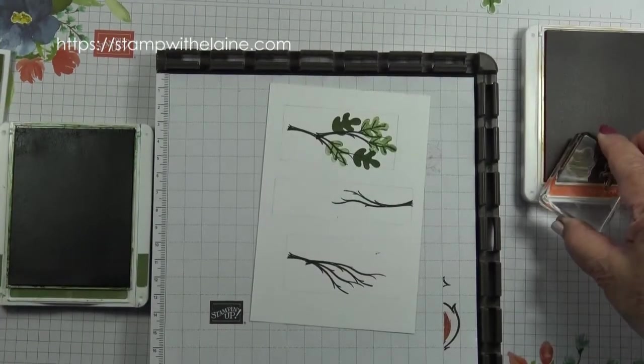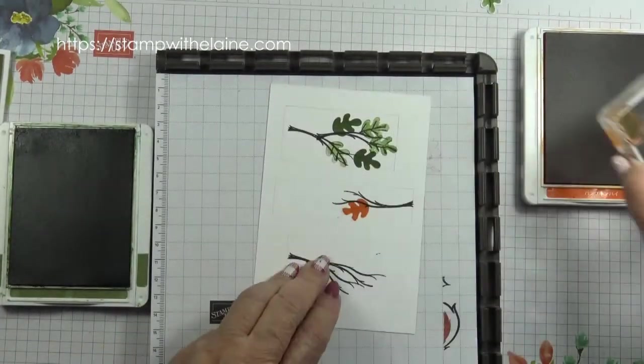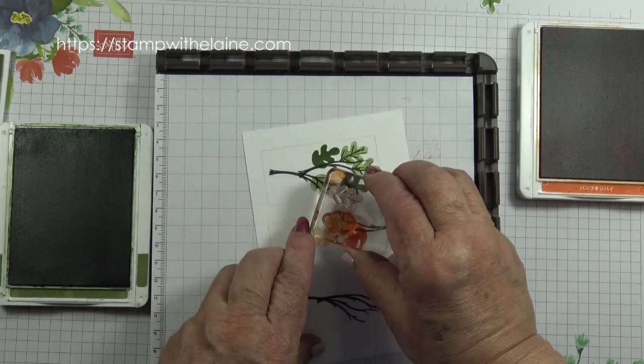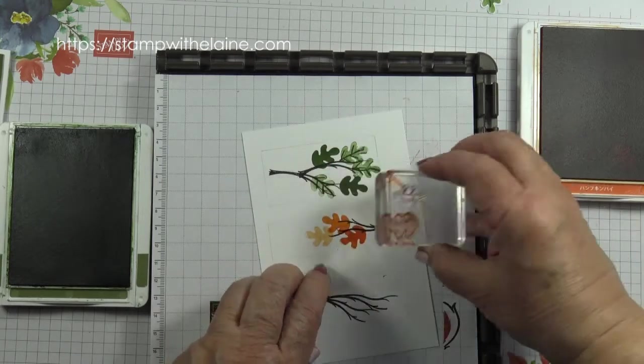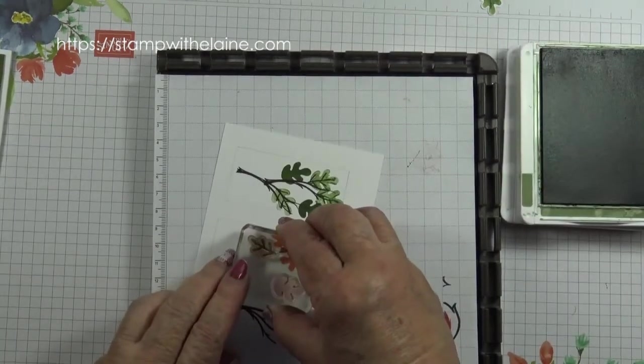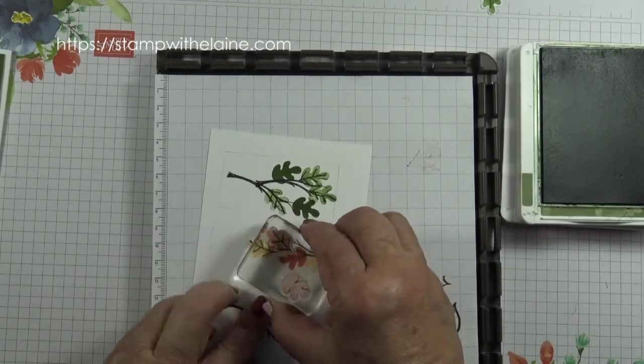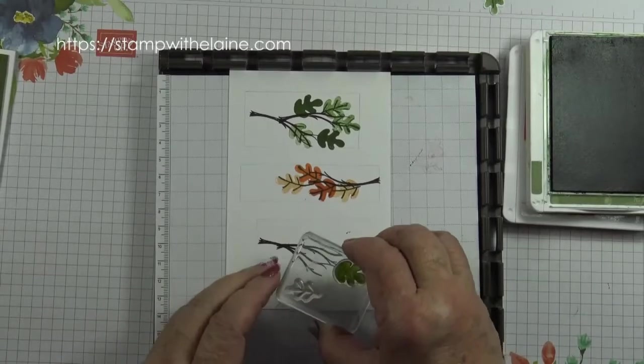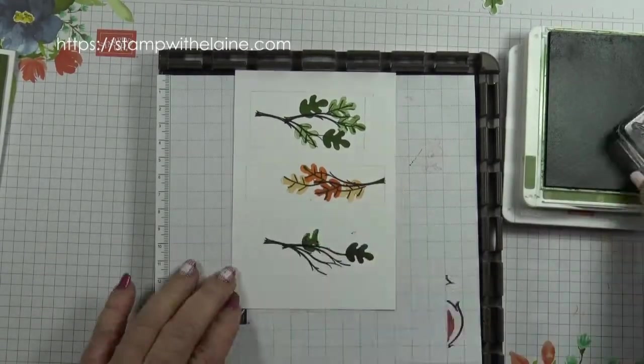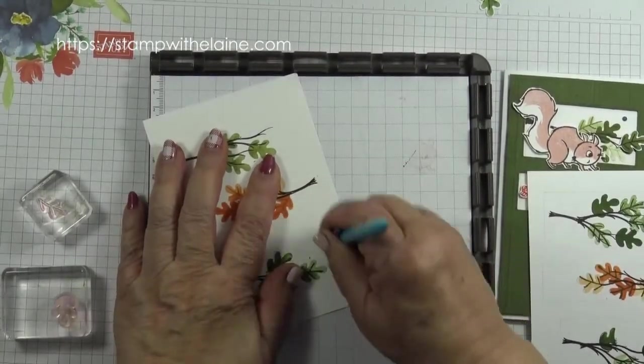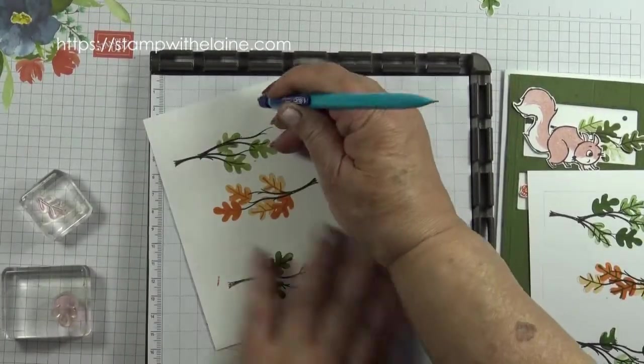I think I might have to do the stems in a darker colour. Now I'm going to swap ink pads to pumpkin pie. Without re-inking I can get some lighter coloured leaves. Stamp the vein of the leaves and then go back to the mossy meadow here. Then rub away the pencil marks.